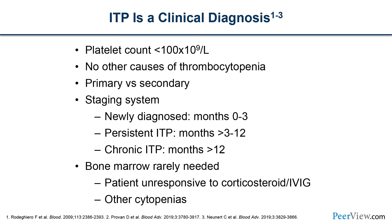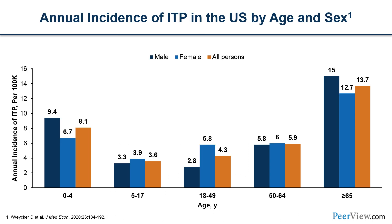Most patients do not require bone marrow biopsy. We reserve it for patients who are unresponsive to corticosteroid or IVIG therapy, particularly those with abnormalities in their blood smear such as abnormal precursors. ITP is like other diseases: as you get older, it gets worse. There is a higher frequency of ITP overall, and also a higher incidence in younger children ages 0 to 4.